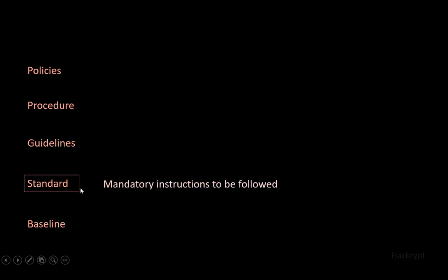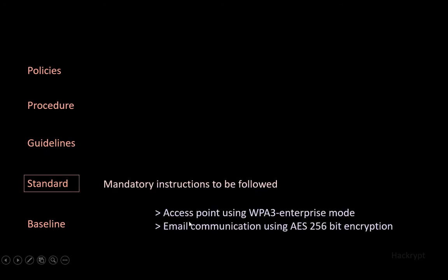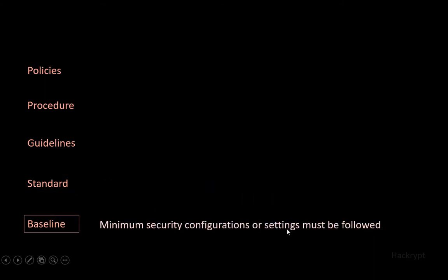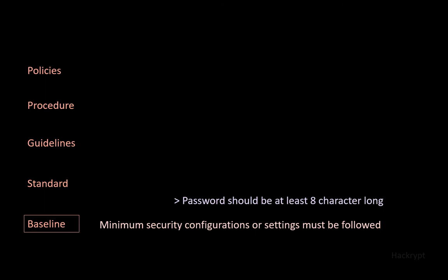Standards are mandatory instructions to be followed. Examples include access points using WPA3 enterprise mode and email communication using AES-256 — here WPA3 enterprise and AES-256 are standards. A baseline is the minimum security configuration or setting that must be followed; it's the bottom line of security. For example, a password should be at least 8 characters long — it means you can't have a 7-character password, but you can have 10 or 14 characters. From these definitions we can see that all these are derived from policies.